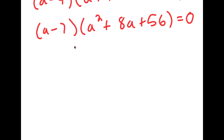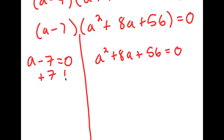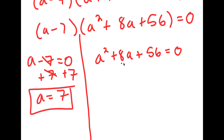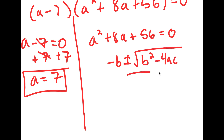Now from here I get two equations. I get a minus 7 is equal to zero, and I get a squared plus 8a plus 56 is equal to zero. For a minus 7 equals zero, I can add 7 on both sides, so I get a equals 7. And for a squared plus 8a plus 56 equals zero, I can use the quadratic formula, which is negative b plus or minus the square root of b squared minus 4ac all over 2a.